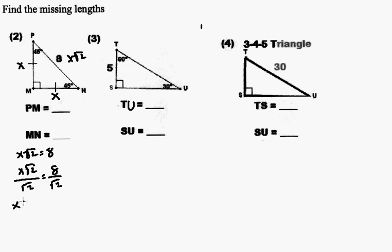So we have x is equal to 8 over the square root of 2. We must multiply that by a form of 1, so we multiply through by the square root of 2 over the square root of 2, which leads us to x equal to 8 square root of 2 over 2, which is equal to 4 square root of 2. So both PM and MM will be 4 square root of 2, which will be the answer for both of those.